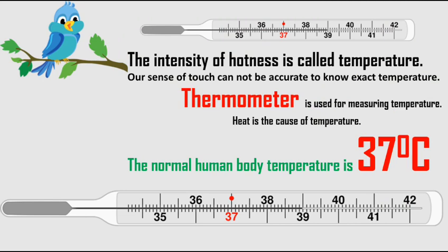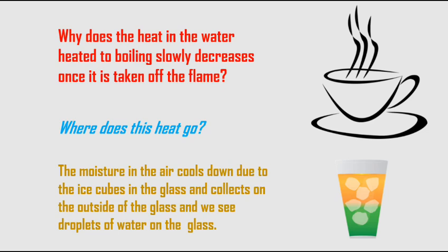Our sense of touch is not accurate enough to tell the exact temperature, so a device called a thermometer is used for measuring temperature. Heat is the cause of temperature. The normal human body temperature is about 37 degrees Celsius, as marked on a clinical thermometer. Why does the heat in water heated to boiling slowly decrease once taken off the flame? You might have observed droplets of water on a glass where ice cubes are kept — the moisture in the air cools down due to the ice and collects on the outside of the glass.